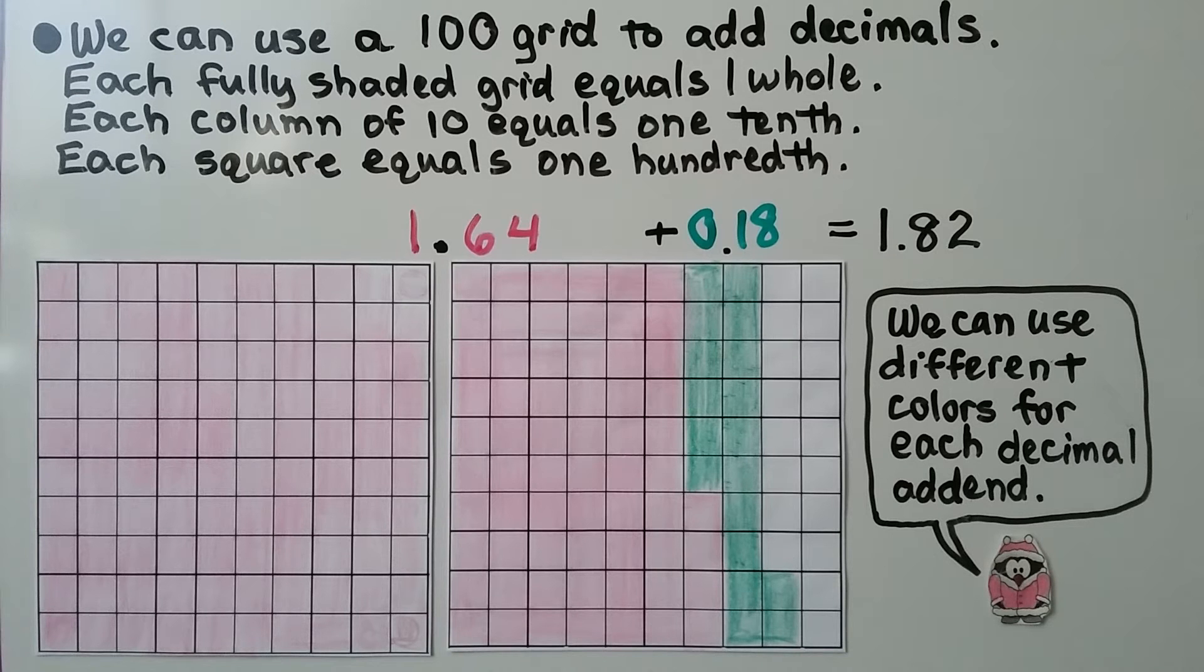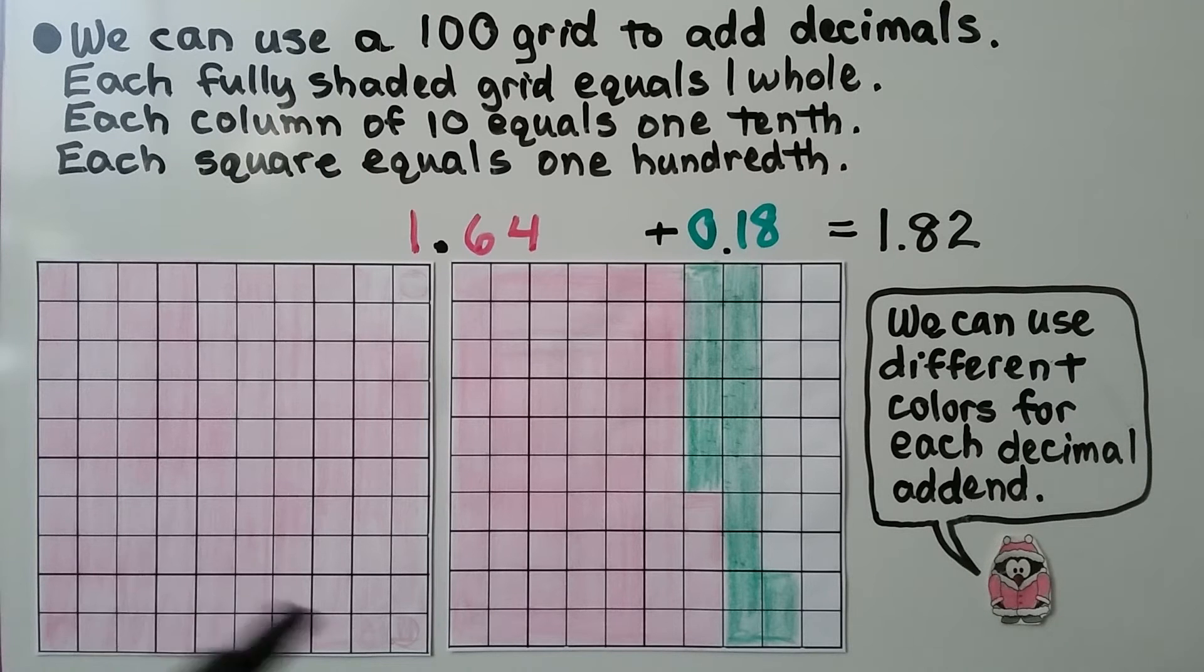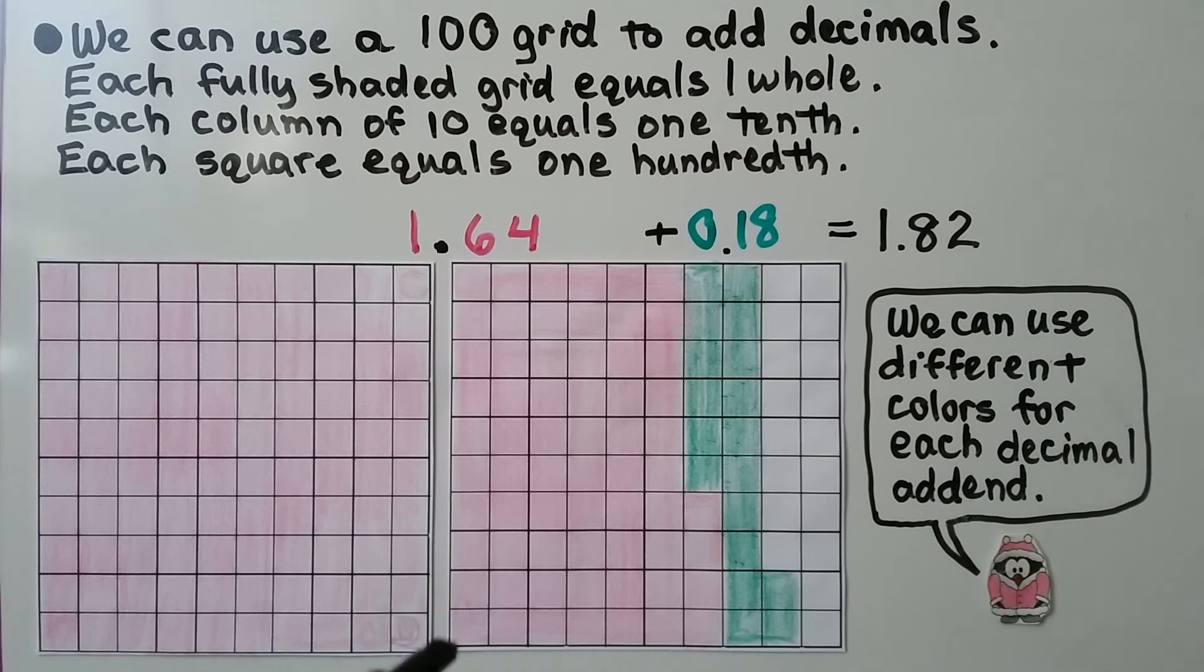We can use a 100 grid to add decimals. Each fully shaded grid equals 1 whole. And each column of ten, coming down, is equal to 1 tenth. And each square equals 1 hundredth.